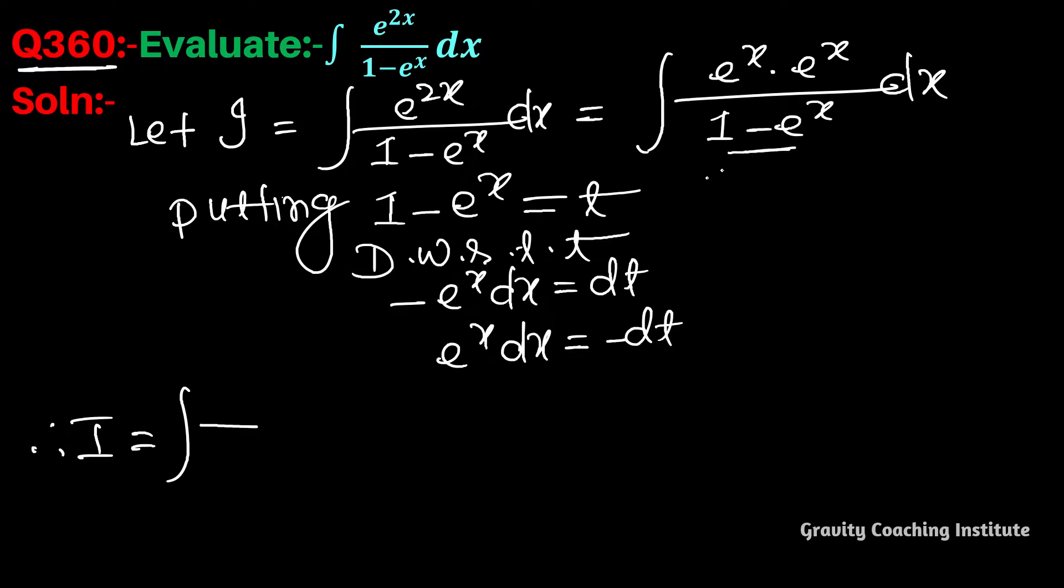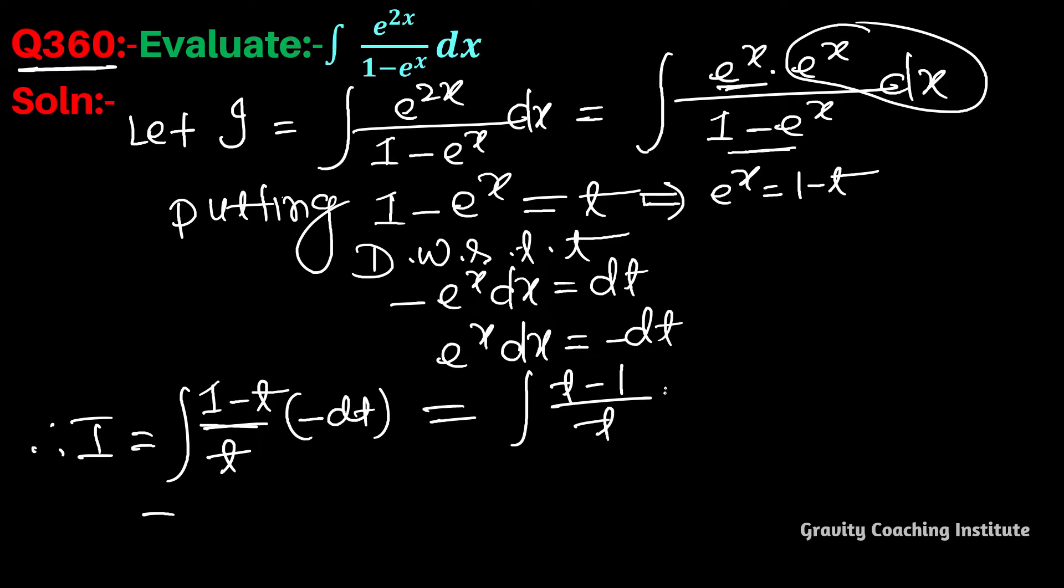Now we put this in place of e to the power x. E to the power x times dx becomes minus dt, equal to minus times 1 minus 1 by t, and then we split the fraction.